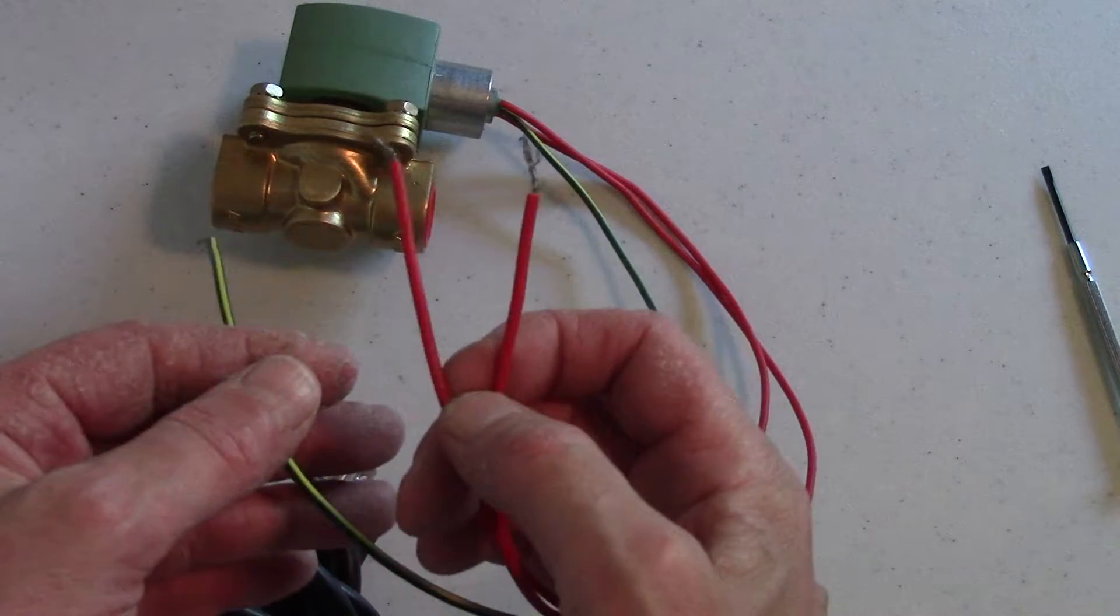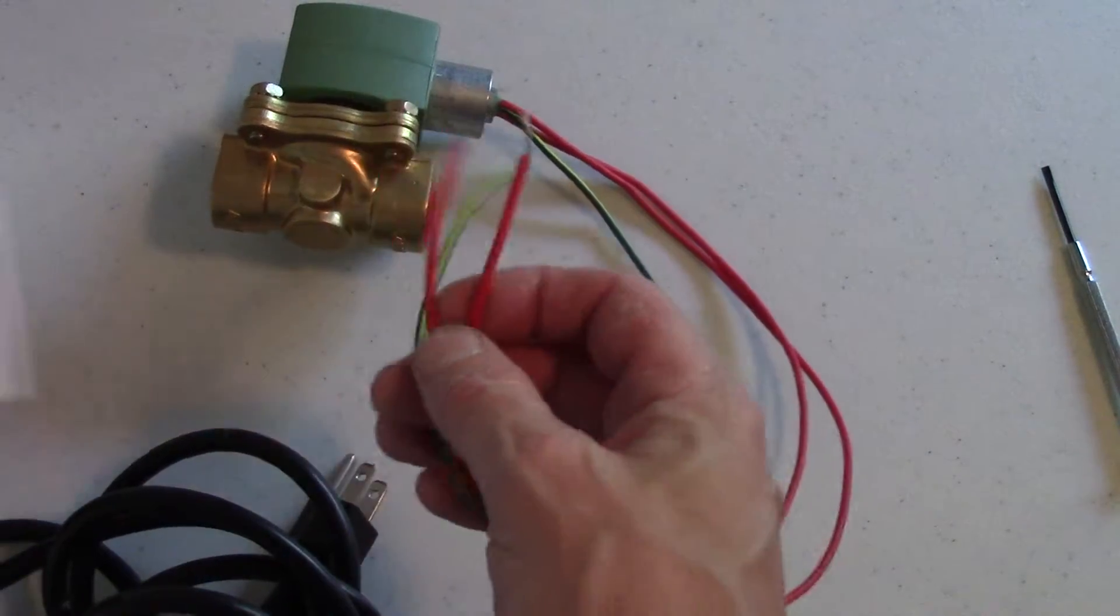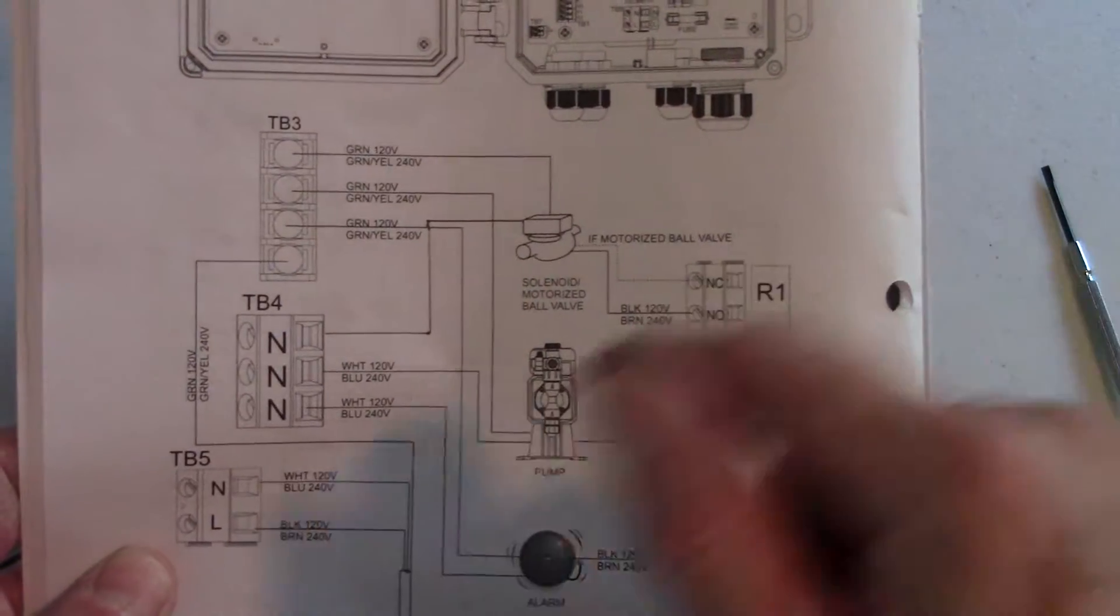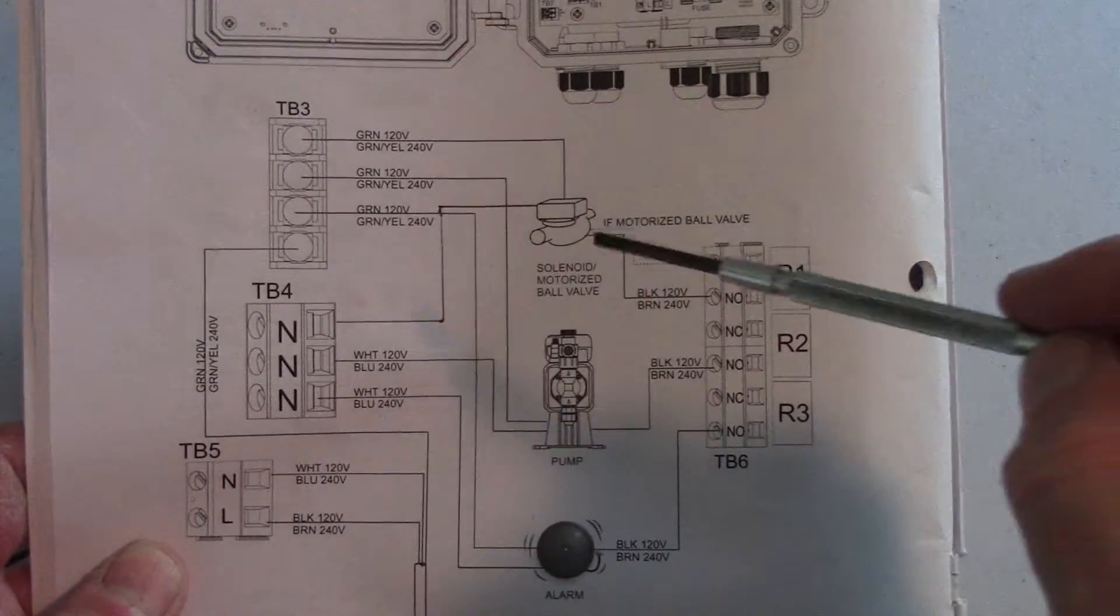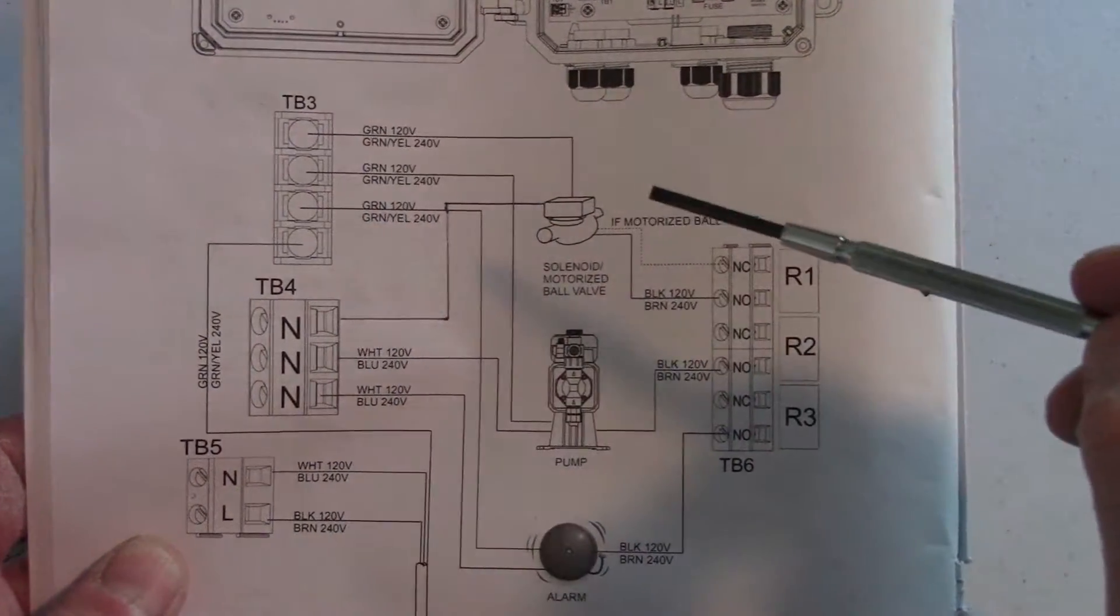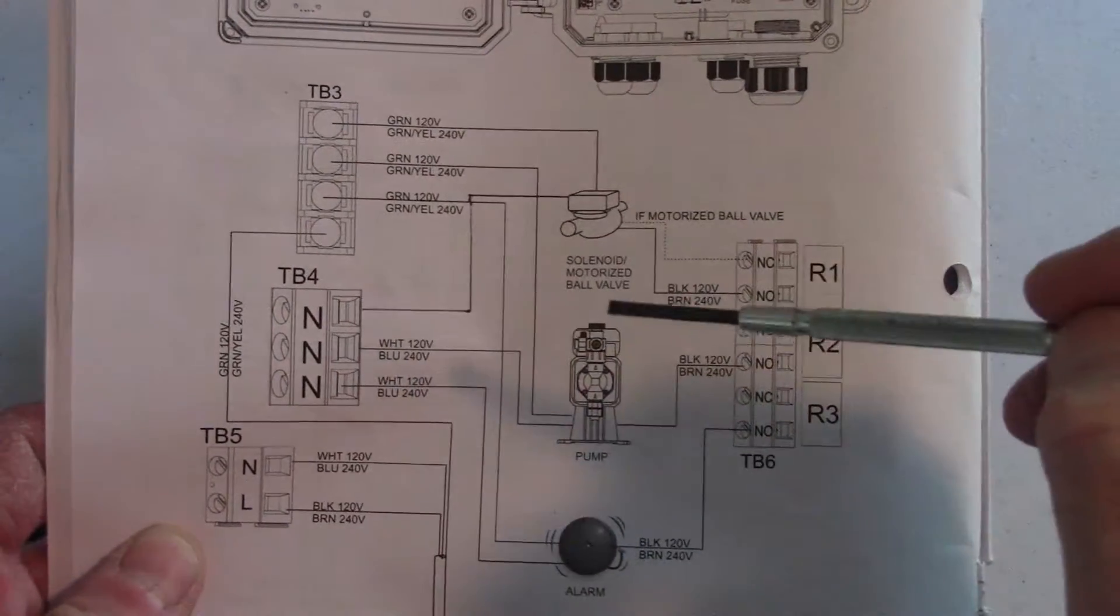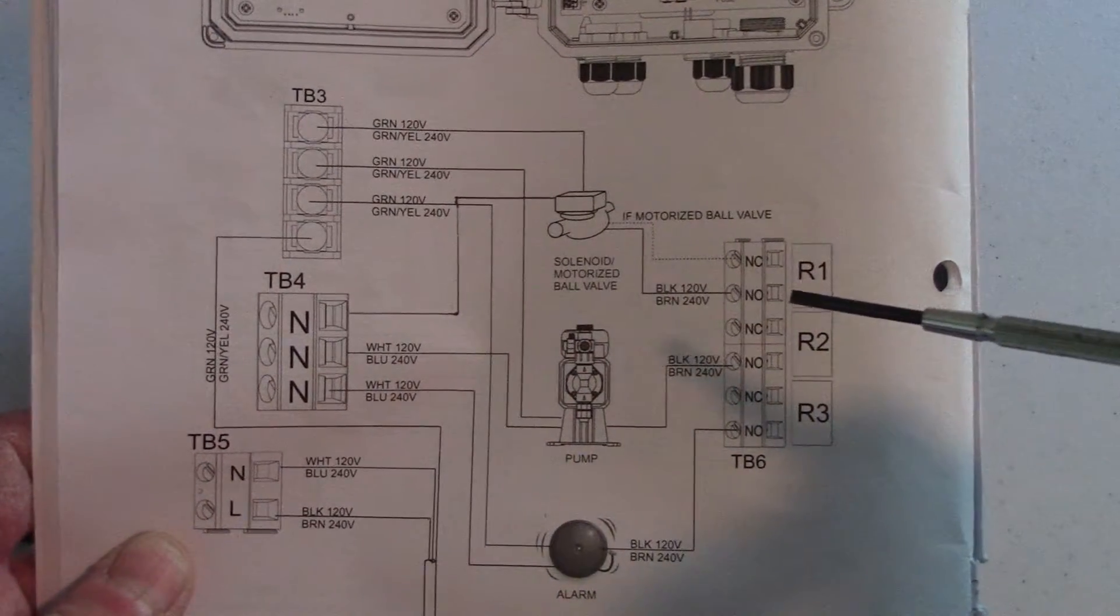Polarity is not critical for the solenoid valve so if you look at the wiring diagram for the controller you'll see the ground goes to TB3 and the other two wires go to TB4 and then R1 on the normally open side.